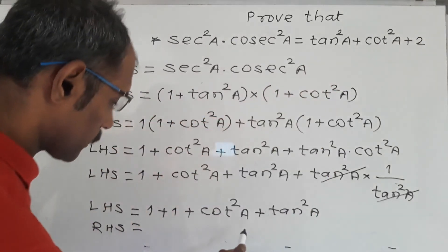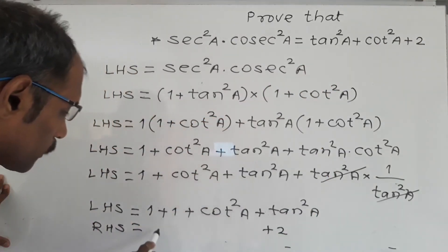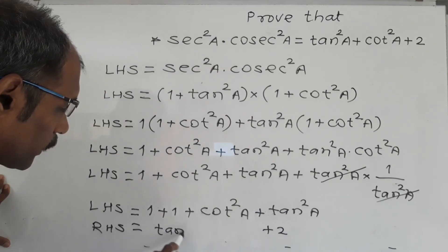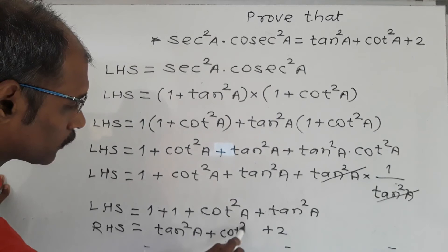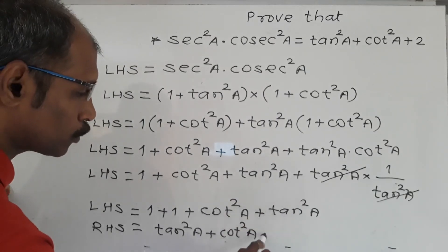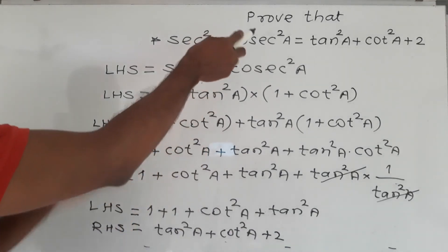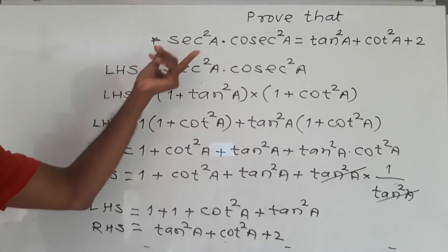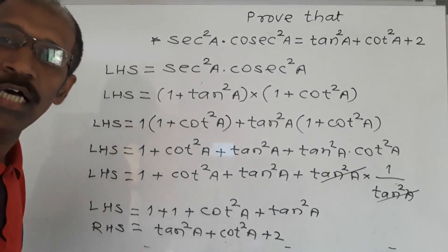See this. Tan square A plus cot square A plus 2. This way we obtain RHS by starting from LHS. Therefore finally LHS is equal to RHS. Hence proved.